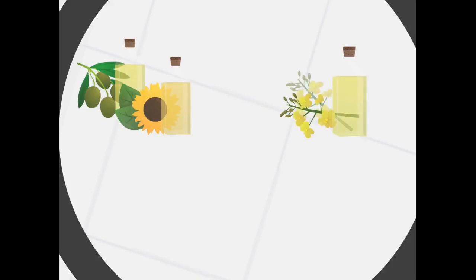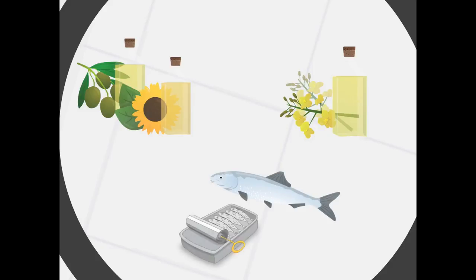Omega-3 and omega-6 are contained in oils, more specifically sunflower, with rapeseed being good for omega-3. Rich sources of DHA include fish, particularly fatty fish like salmon, mackerel, and sardines.